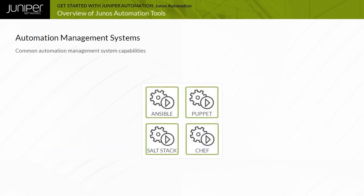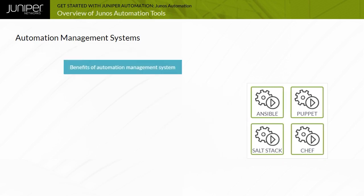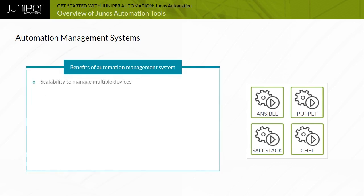Automation management systems, also known as IT automation platforms or configuration management systems, refer to software used in DevOps environments. Junos integrates with some of the most widely used automation management systems in the industry, including Ansible, Salt, Puppet, and Chef. An automation management system manages hundreds or thousands of devices.